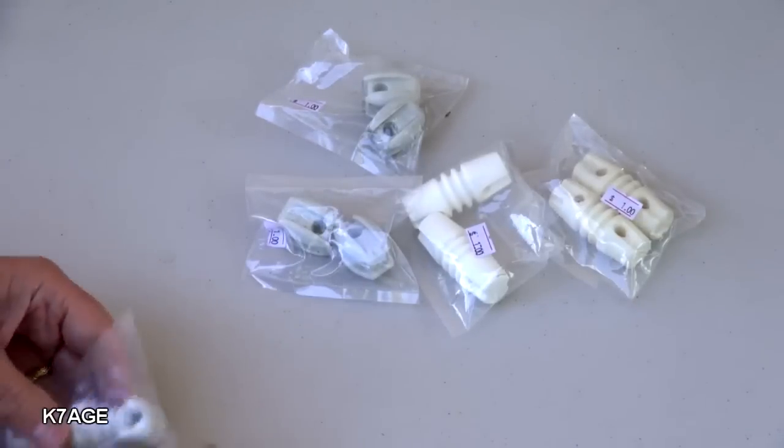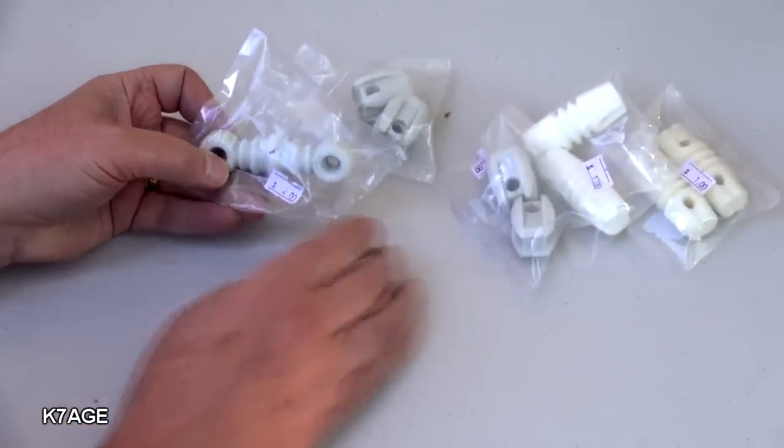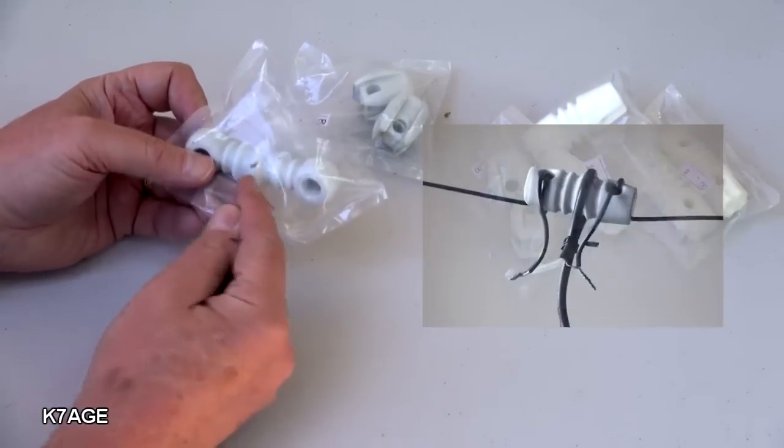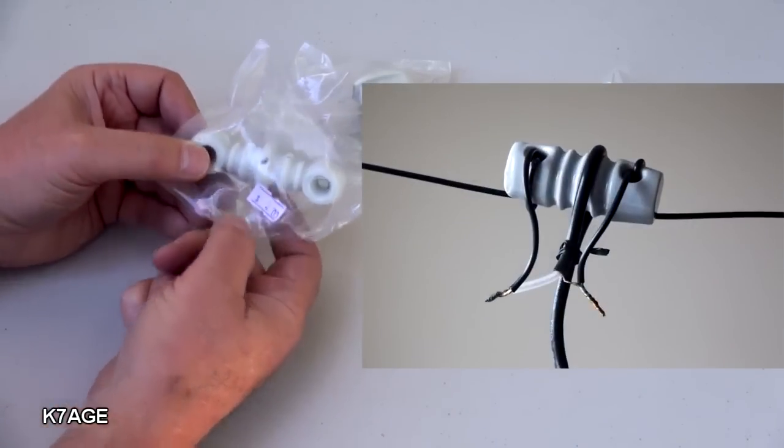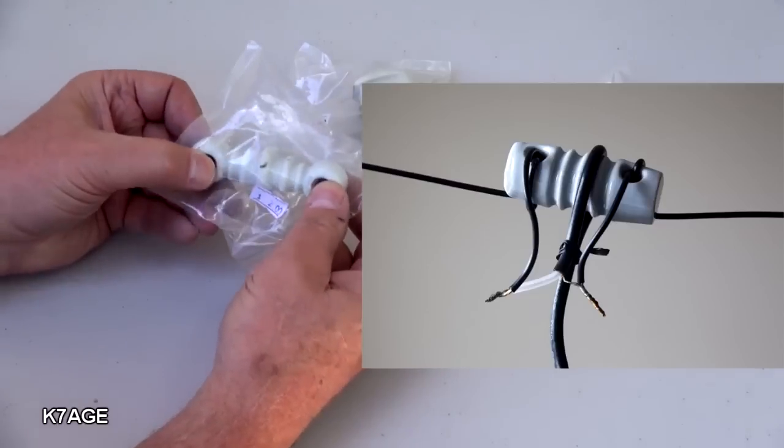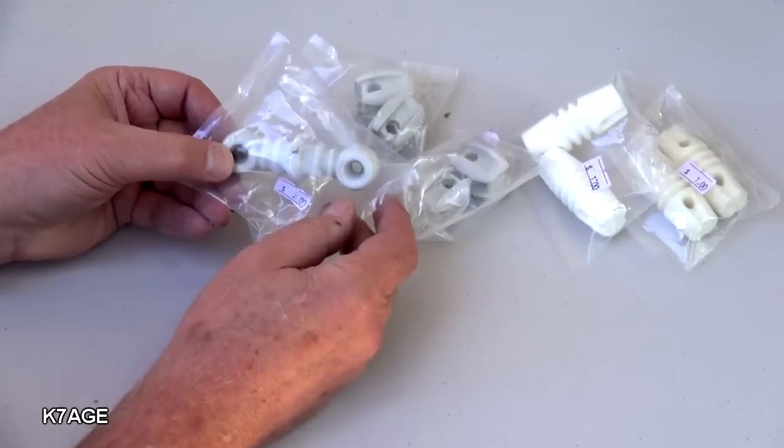I also bought this center insulator for $2 and with this it's got a couple larger rings in the middle and you can wrap your coax around there and tie it off with a cable tie and seal it up with some RTV and connect your dipole wires to these lugs and run out to the insulators on each end.